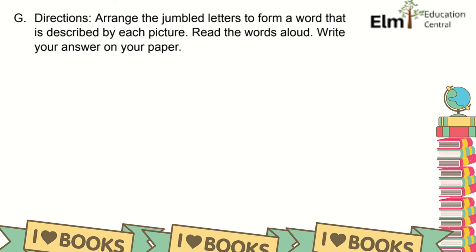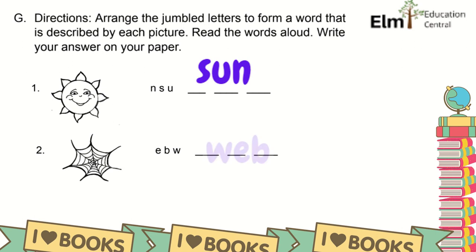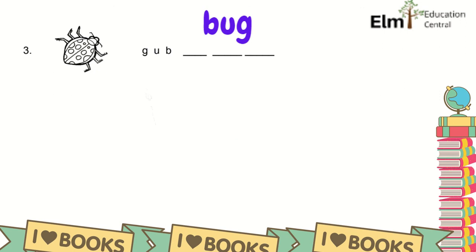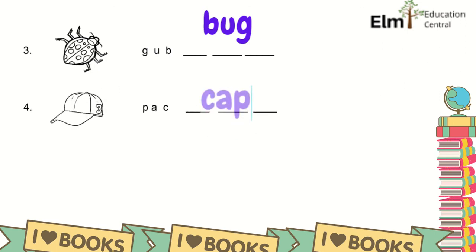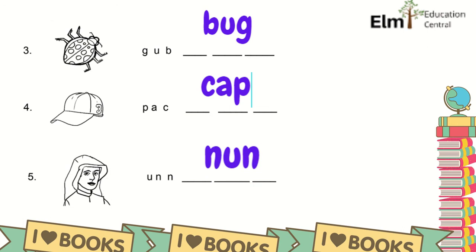Arrange the jumbled letters to form a word described by each picture. Read the words aloud. Write your answer on your paper. Number 1: sun. Number 2: web. Number 3: bag. Number 4: cup. And number 5: nun. So all of these are again in CVC pattern.